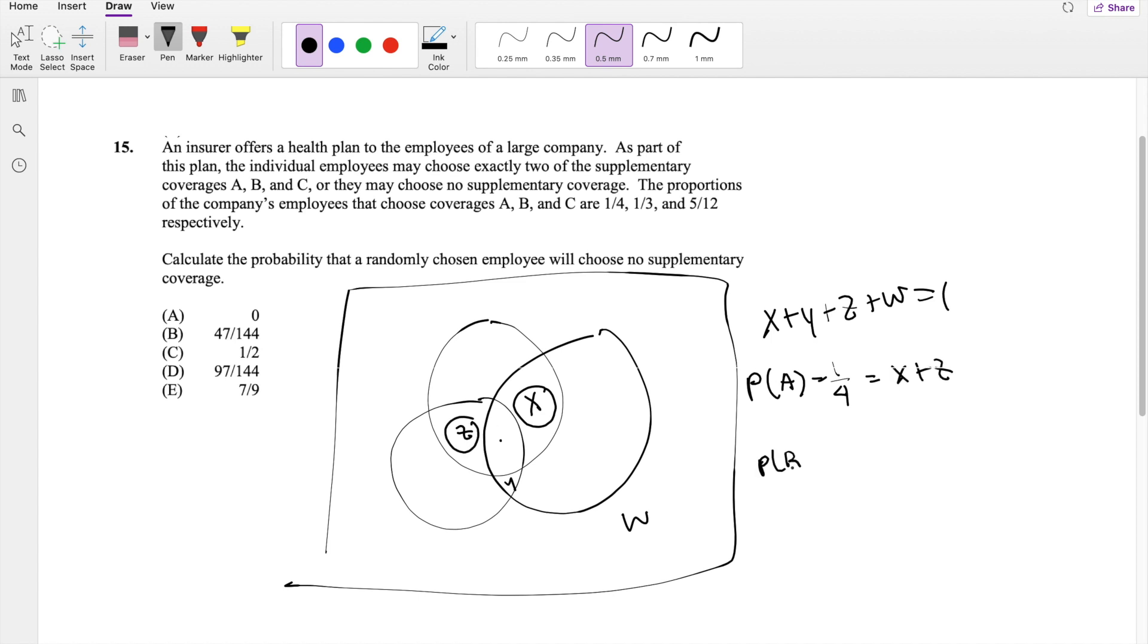Probability of B, which is defined as one-third, is equal to, so let's say this is A, B, and C. B will be X and Y. And finally, the probability of C is equal to Z and Y, and that's equal to five-twelfths.